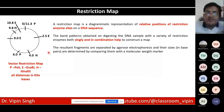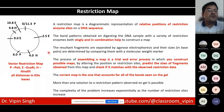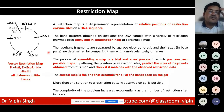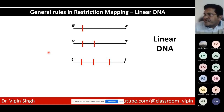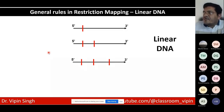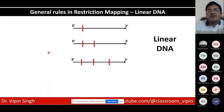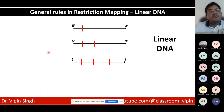General rules of restriction mapping: for a linear DNA, if there is one cut site, you get two fragments; two cut sites give three fragments; three cut sites give four fragments. The general rule is: n restriction sites give n+1 fragments for linear DNA. For circular DNA, the first cut simply opens the circle into a linear molecule, so n restriction sites give exactly n fragments.